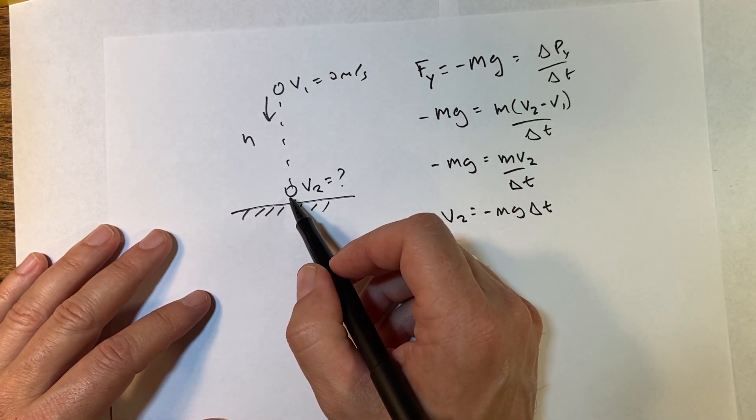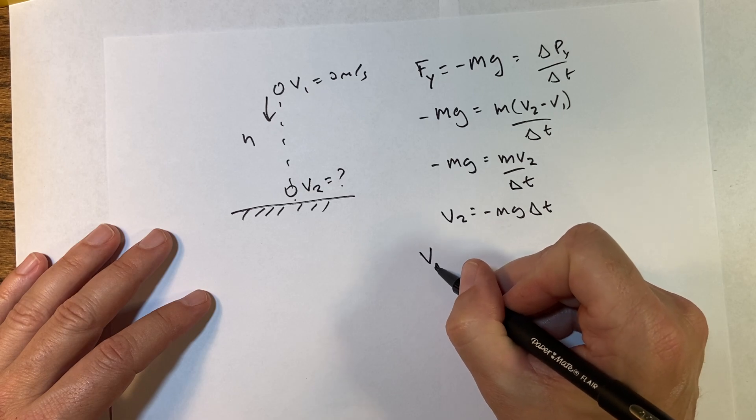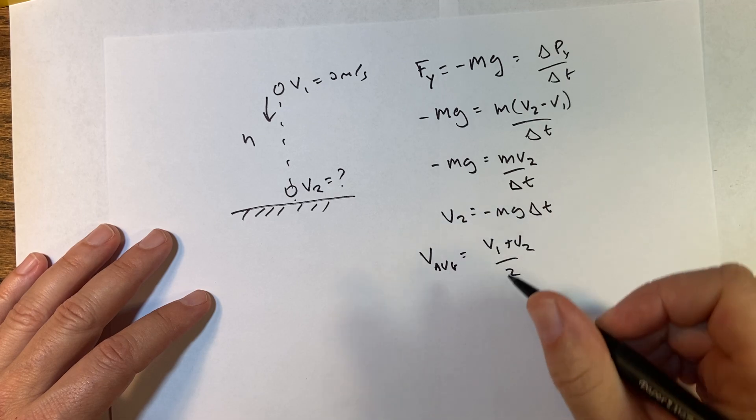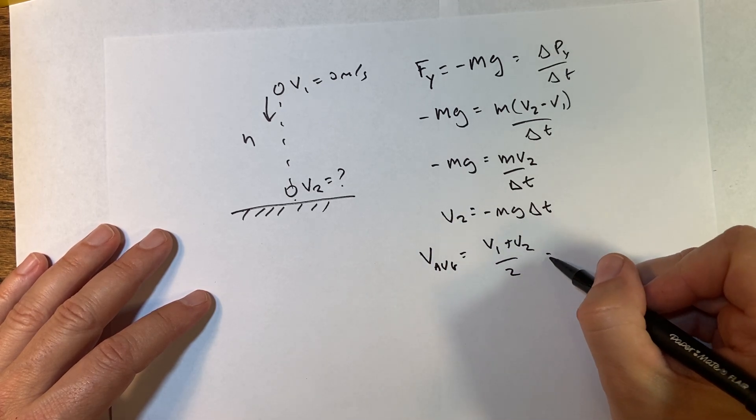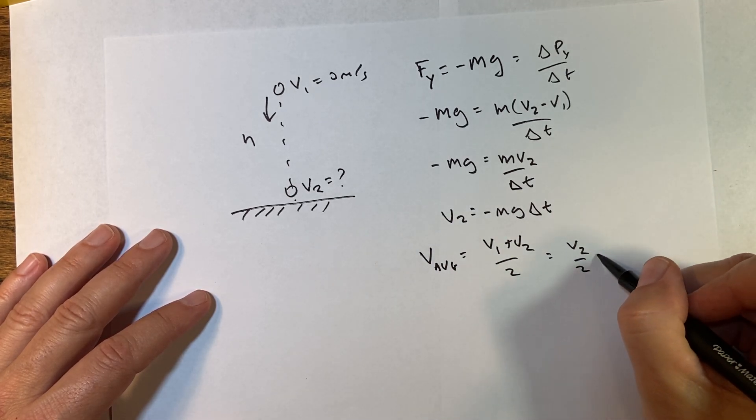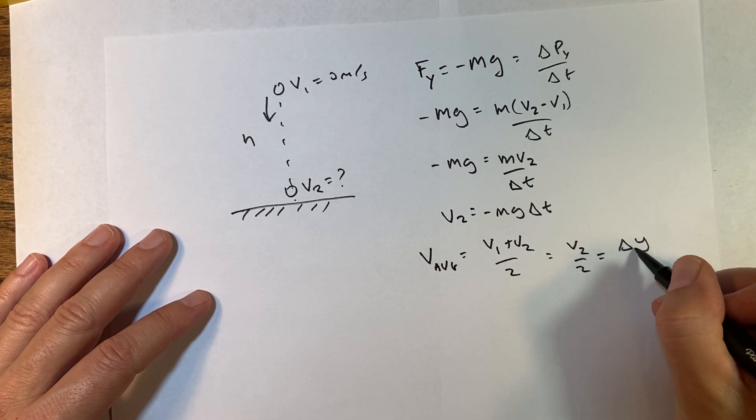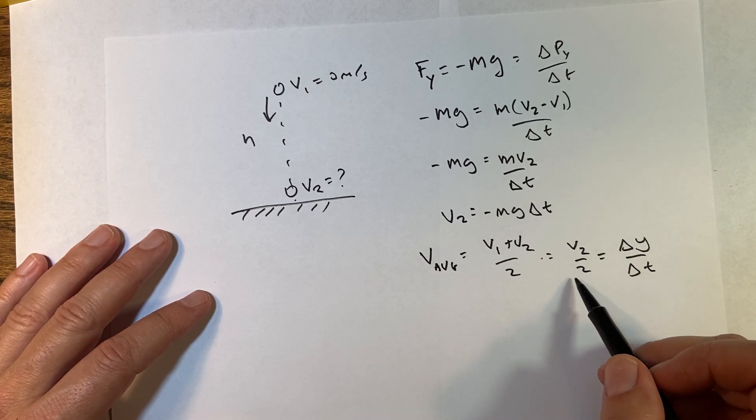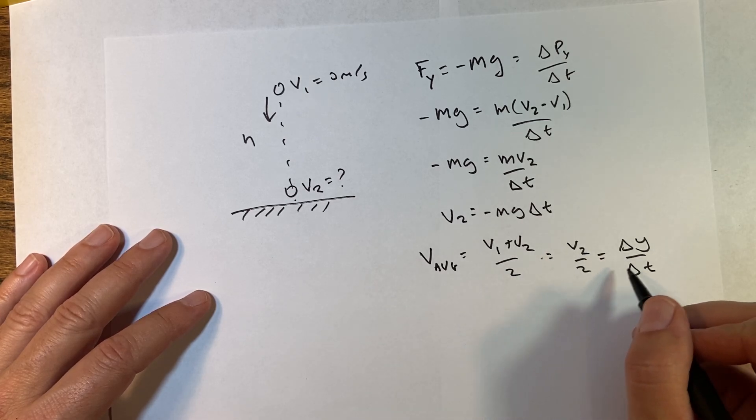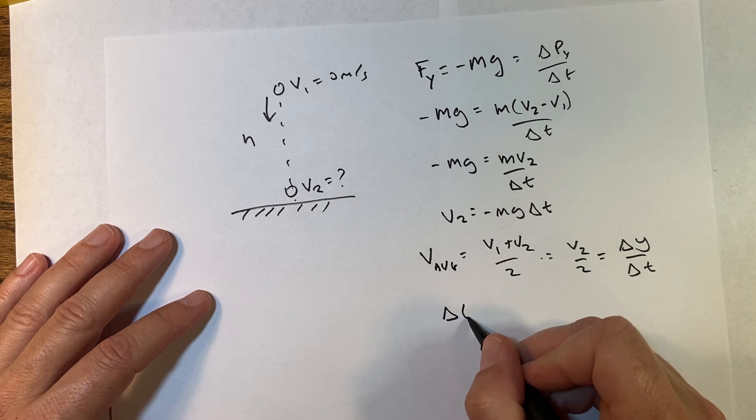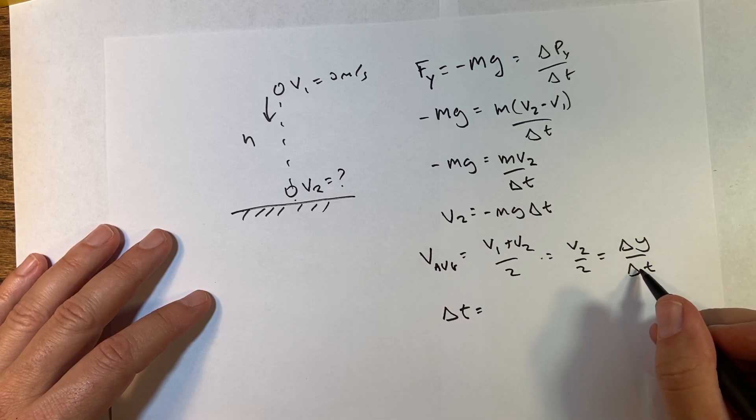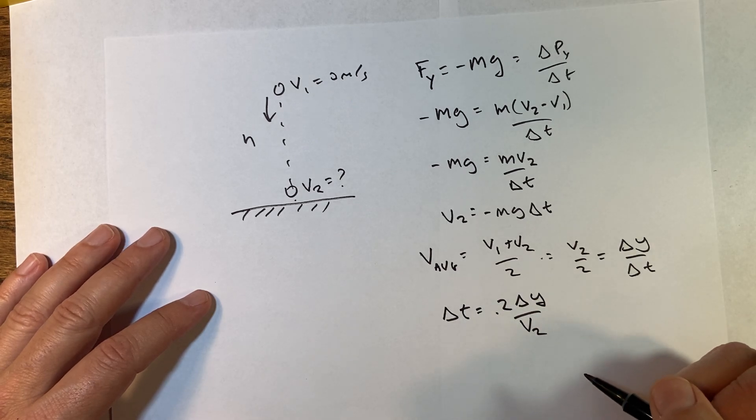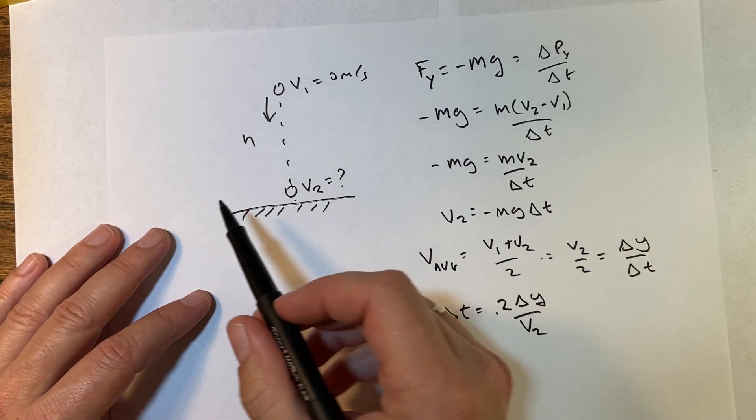Up here look, if this is going from zero to v2, I can say the average velocity—and this again in the y direction—is v1 plus v2 over 2. But v1 is zero, so it's going to be v2 over 2. And this is going to be equal to delta y over delta t. That's the definition of average velocity; there's two definitions. So from this I can solve for delta t: delta t equals 2 delta y over v2.